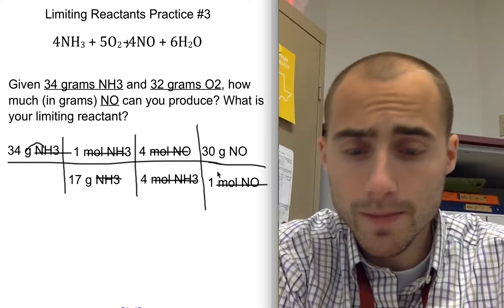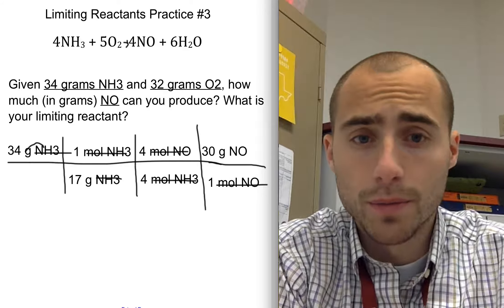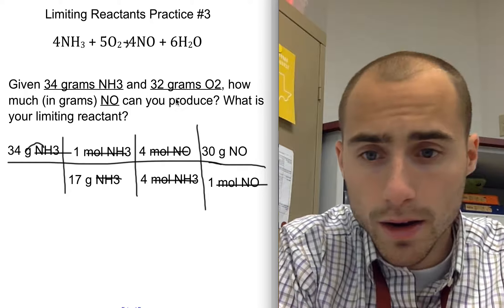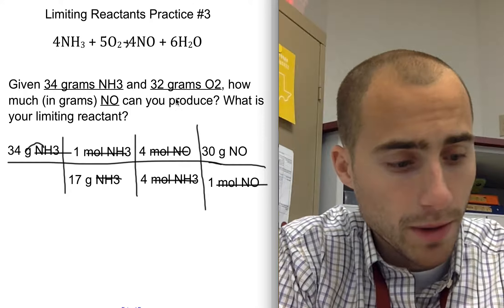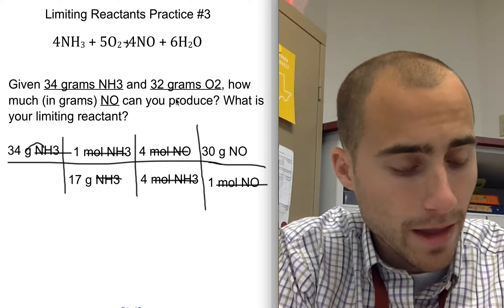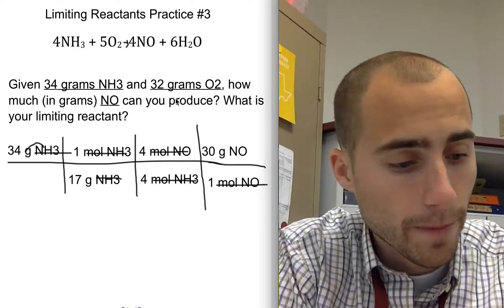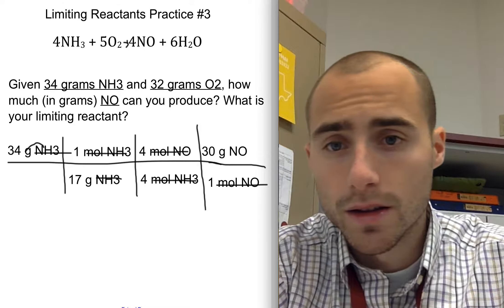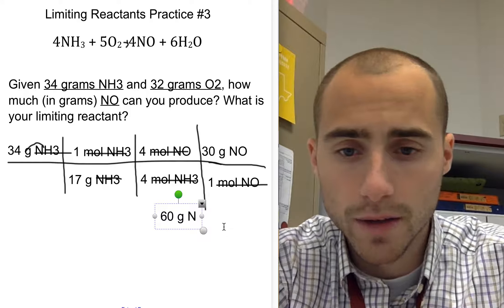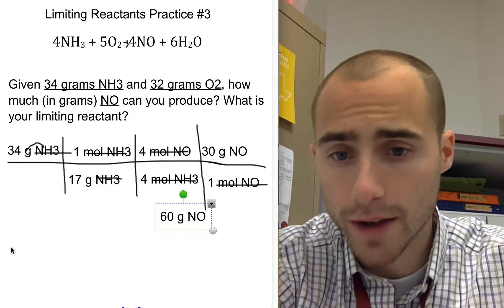And then moles of product into grams of product. So now I just multiply straight across and divide. So I have 34 multiplied by 4 multiplied by 30 equals 4080, and I divide that by 17 times 4, you end up with 60. So 34 grams of NH3 will produce 60 grams of nitrogen monoxide. Absolutely not. I have to always do two dimensional analysis problems.